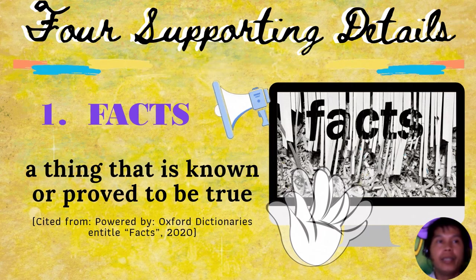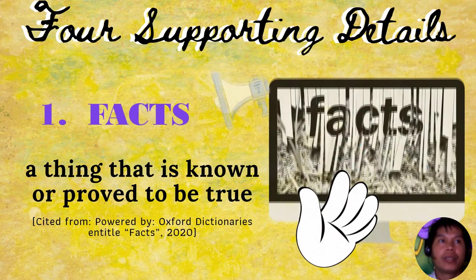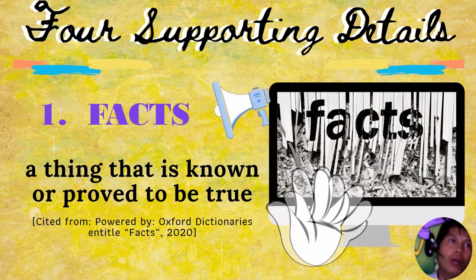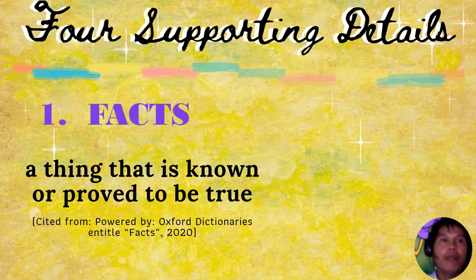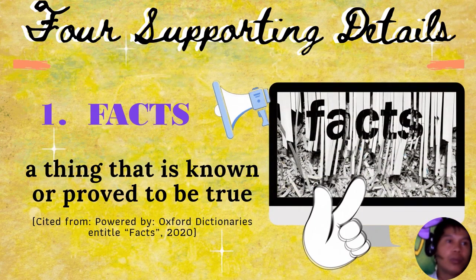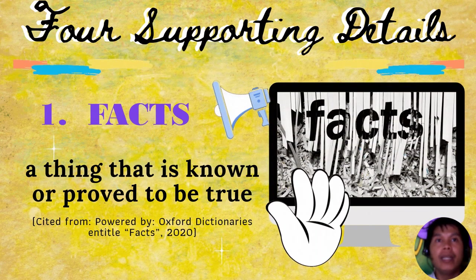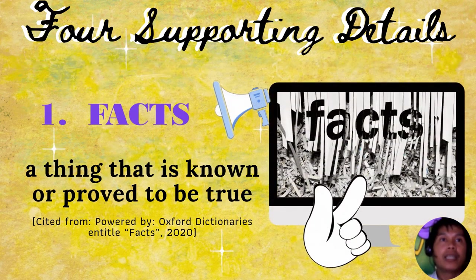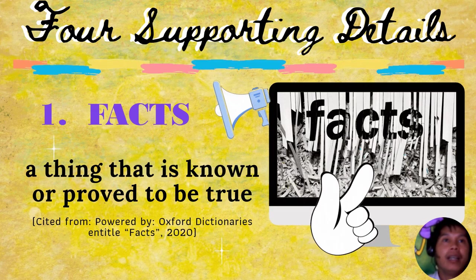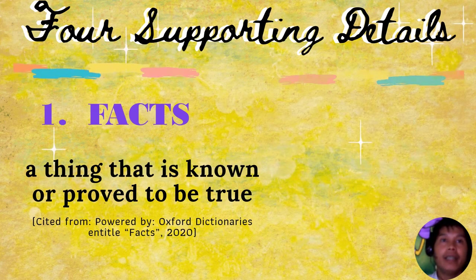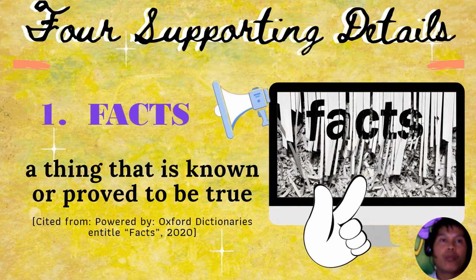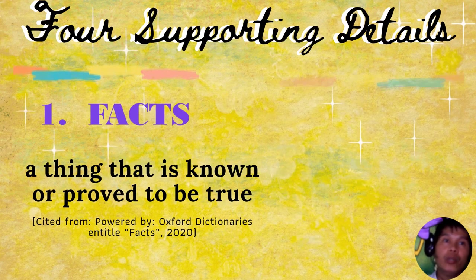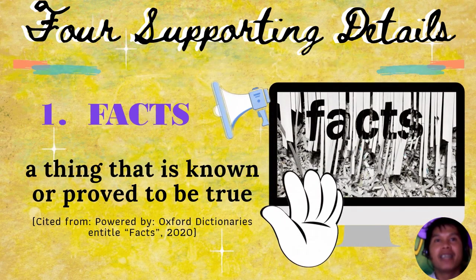Such supporting details can take many forms, but they generally tend to include one or more of the following: number one, facts; number two, expert testimony; number three, statistics; number four, personal experiences. Let's take a brief look at each of these types of supporting details and take note of how they might be used to support a strong topic sentence.